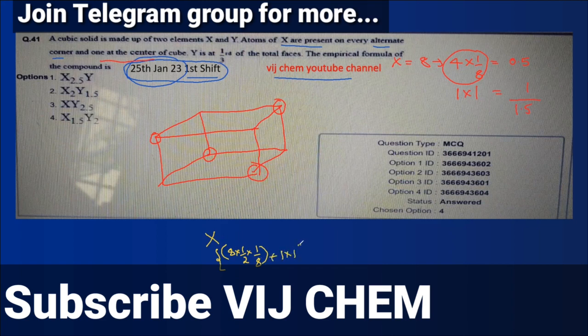So therefore you will get X 1.5. So here you will get 0.5, as a cancellation you will get 1.5. Now coming to the Y, so Y are at one third of the total surfaces.